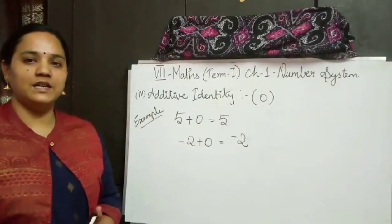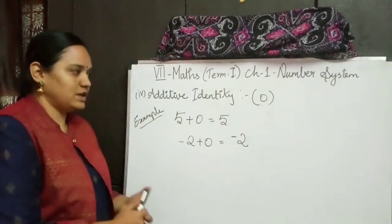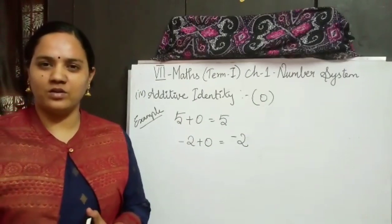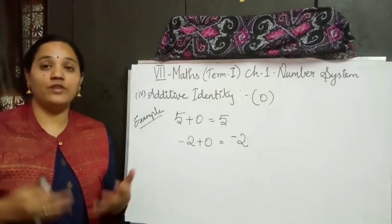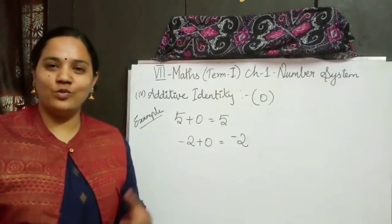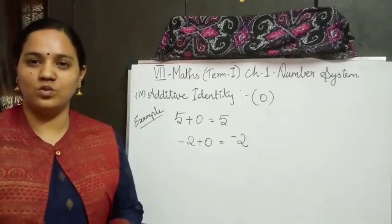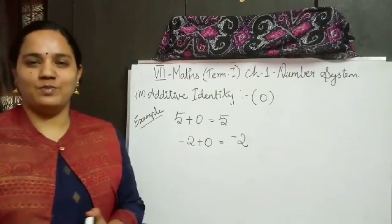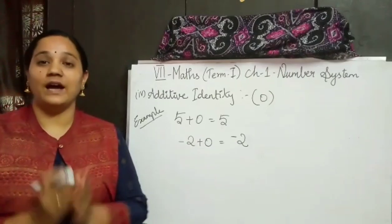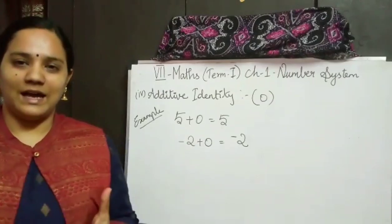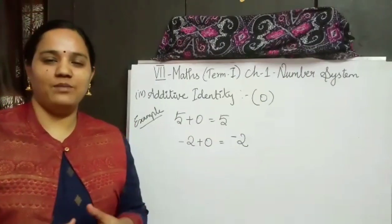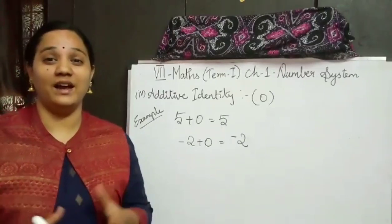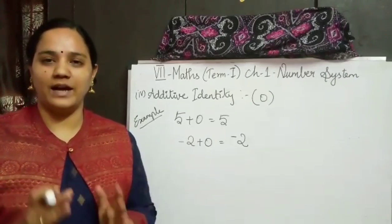The next property is additive identity. Before going into this property, what is meant by identity? You might have come across the word identity mark, and you are familiar about identity card. You will be wearing your ID card for school. That identity card carries your identity — your name, your class, your section, your address, your father's name. Everything that is about you will be present in that identity card. That is your identity — 'Adeyalam' in Tamil. So additive identity means: if we are adding any number to one number, that number's identity should not change.